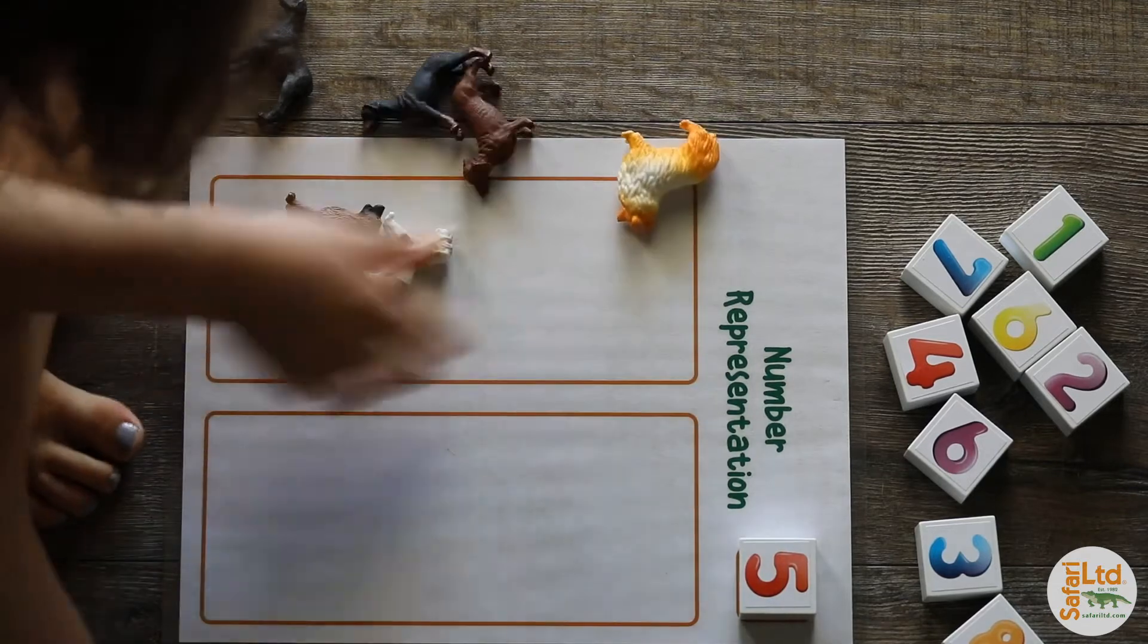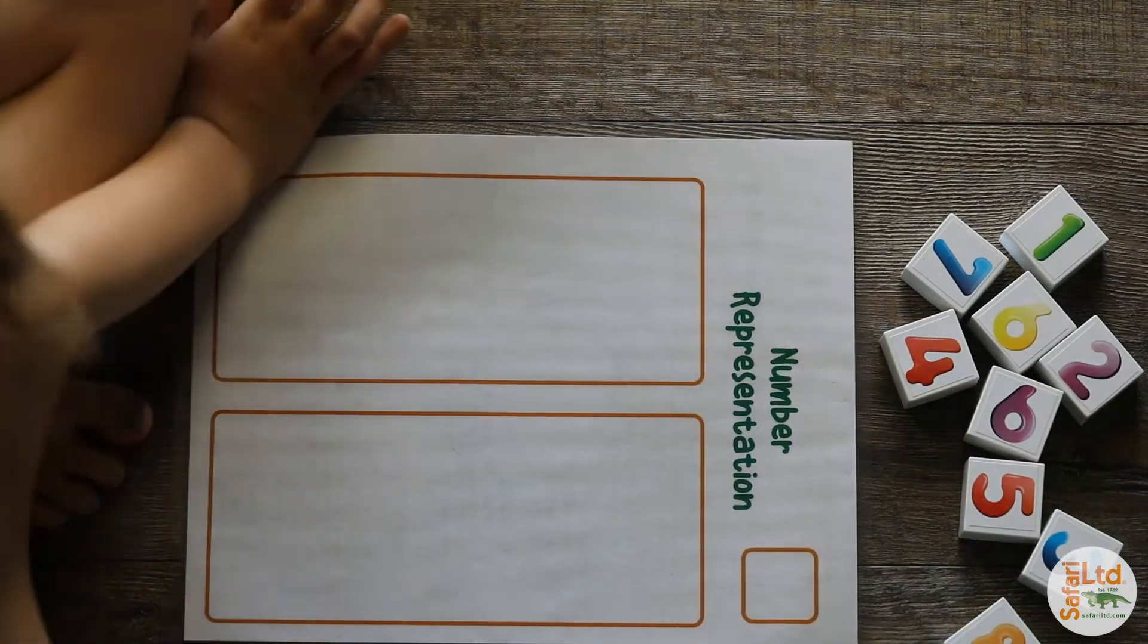At first you can use one-digit numbers and then move up to two-digit numbers as your child progresses.